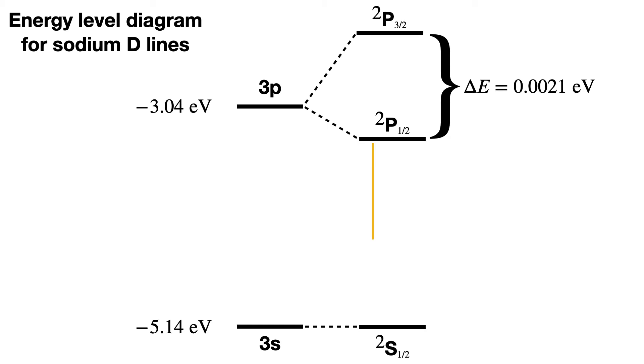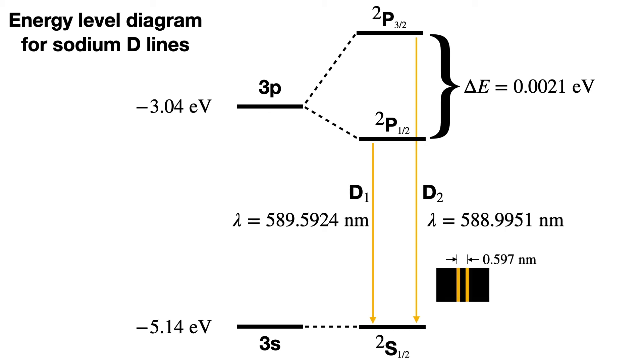The energy difference between these two states is delta E equals 0.0021 electron volts. When electrons pass from the two states to the 3s ground state, photons with slightly different wavelengths are emitted. 589.5924 nanometers for the D1 line from the J equals 1 half state, or 588.9951 nanometers for the D2 line from the J equals 3 half state. Thus a double line of sodium becomes visible.